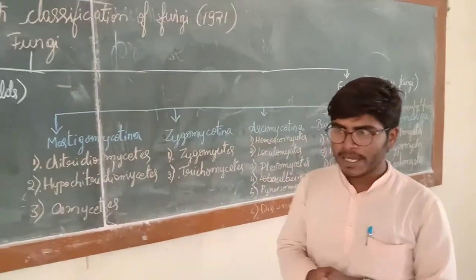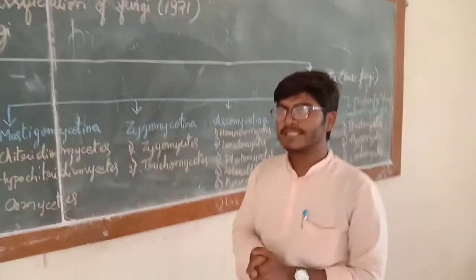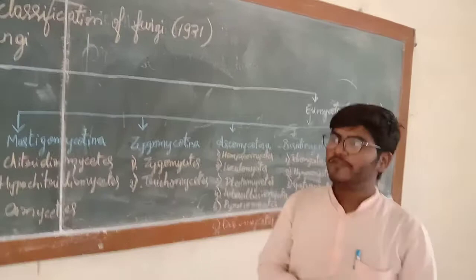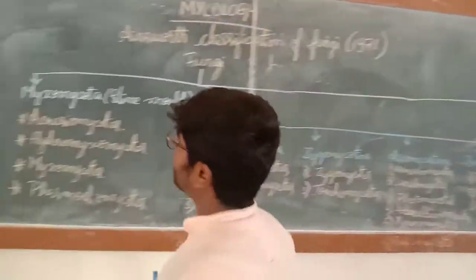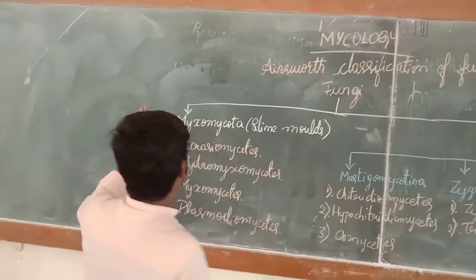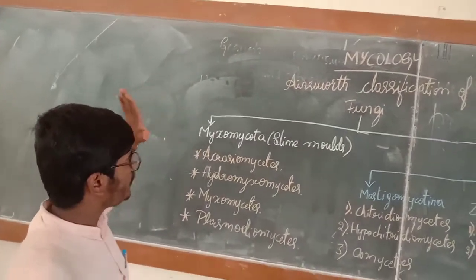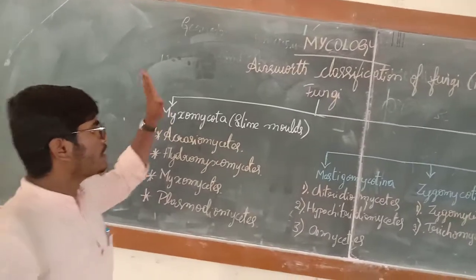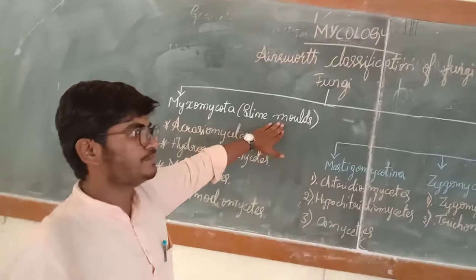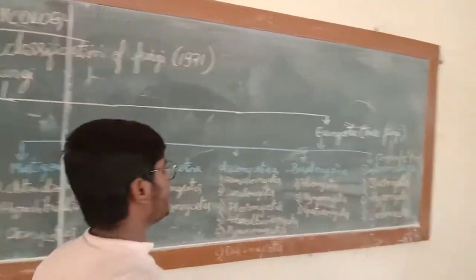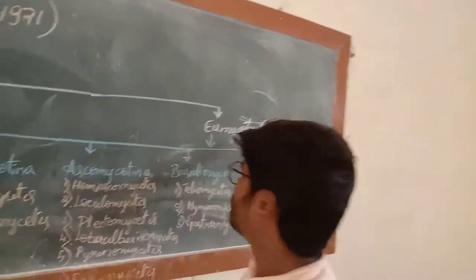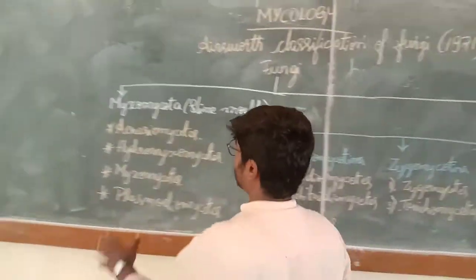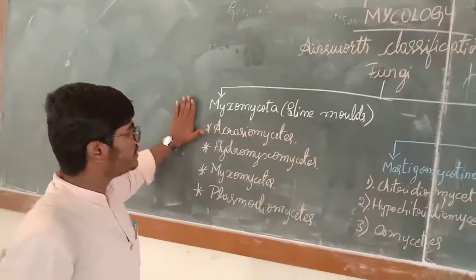Ainsworth classified fungi in 1971 based on the presence or absence of plasmodium or pseudoplasmodium. Plasmodium is the multicellular protoplasm present in fungi. Where plasmodium or pseudoplasmodium is absent, the fungi are classified as Myxomycota, also called slime molds. Where it is present, they belong to Eumycota, also called true fungi.